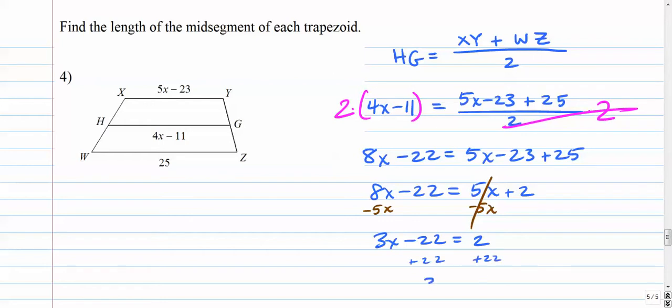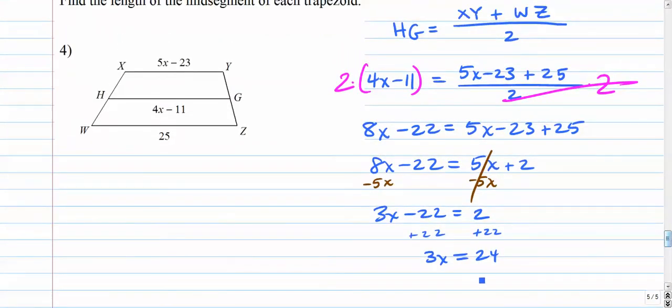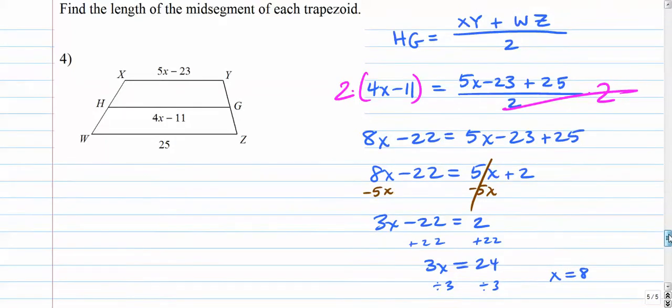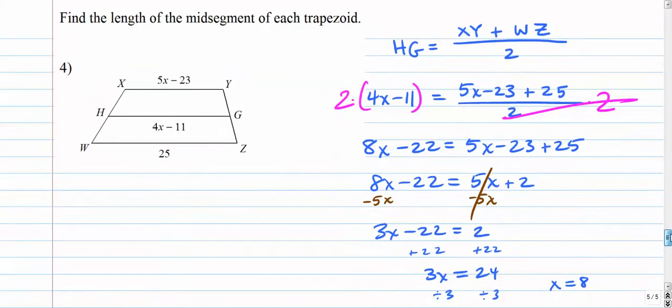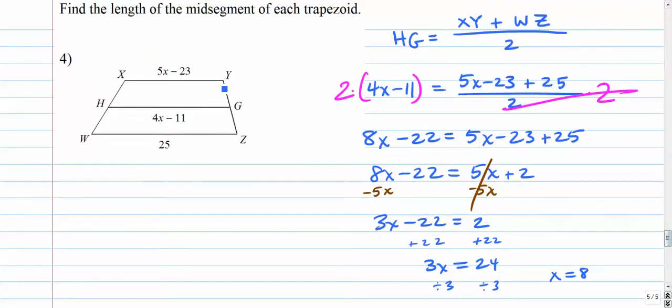3X minus 22 equals 2. Add 22. So 3X equals 24. Divide by 3. Divide by 3. I get X is 8. The problem is find the length of the mid-segment. Find the length of the mid-segment, which is HG.